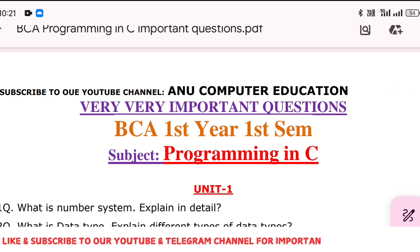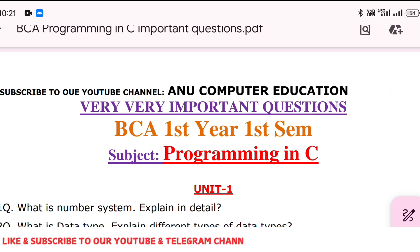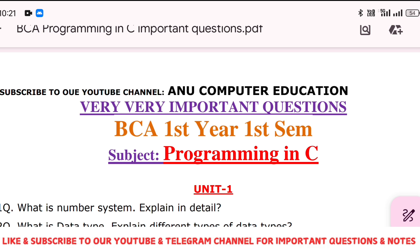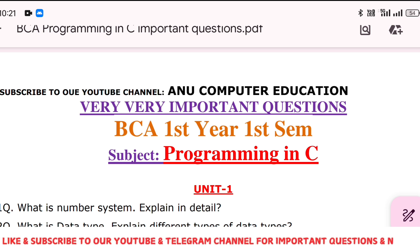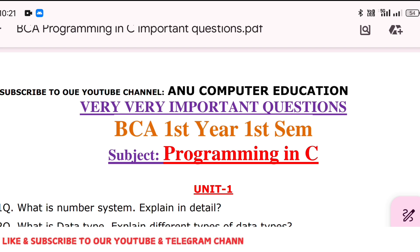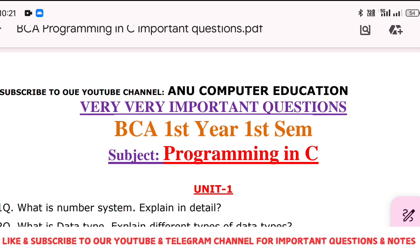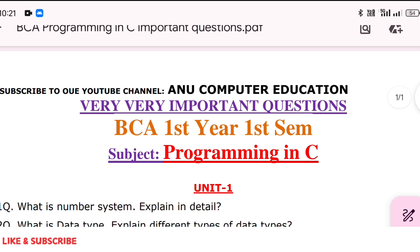Next: what is a data type and what are the different types of data types in C? A data type is nothing but the type of value which we can store in a variable. In C language there are four data types: integer data type, float data type, character data type, and double data type. You have to explain all of them including their sizes.